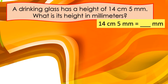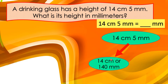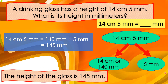A drinking glass has a height of fourteen centimeters and five millimeters. What is its height in millimeters? You are going to find out how many millimeters are there in fourteen centimeters and five millimeters. Fourteen centimeters and five millimeters is equal to one hundred and forty millimeters plus five millimeters. The answer is one hundred and forty-five millimeters.